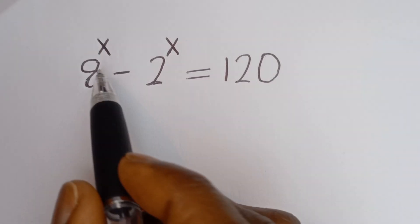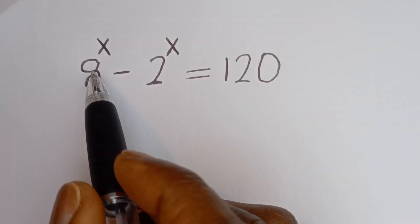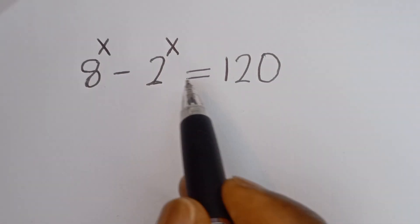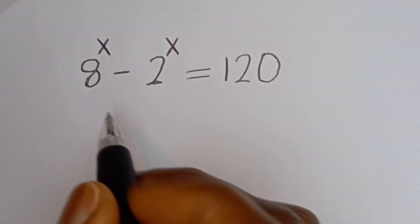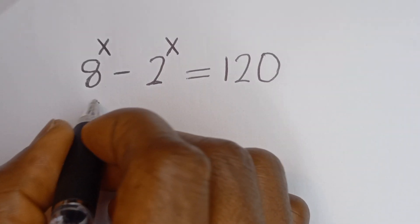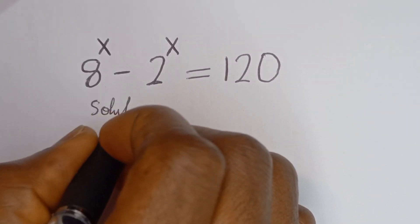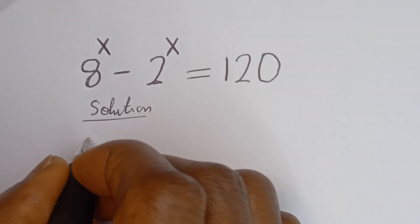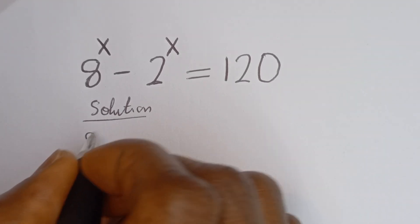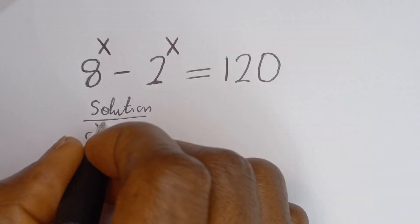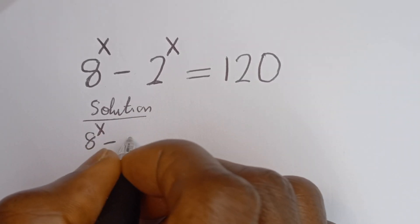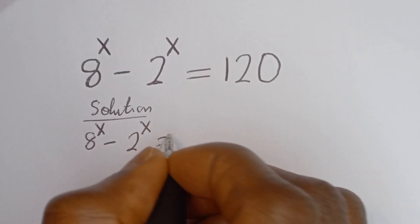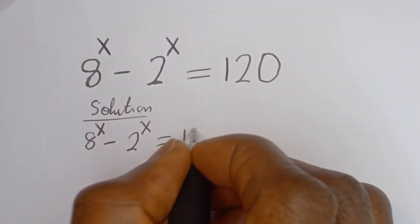Hello. How to solve for x in this equation: 8 to the power of x minus 2 to the power of x is equal to 120. Solution: we have 8 to the power of x minus 2 to the power of x is equal to 120.